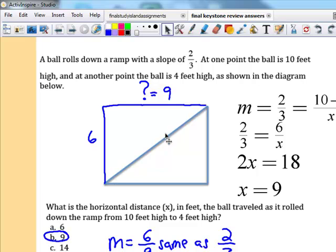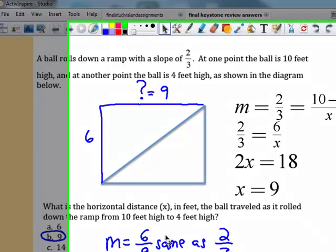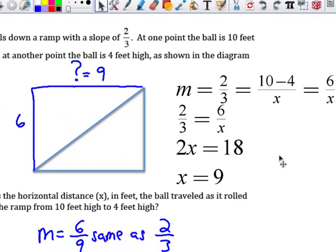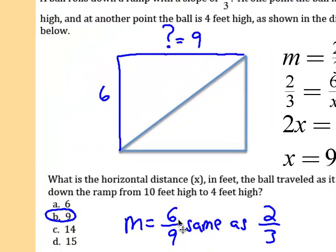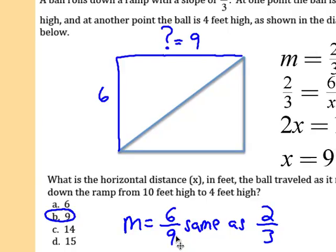Some common sense. We are told that the slope of this line right here is 2 over 3. So we want to know if you go up 6, how far over you have to go for this particular figure. We're told this is 4, this is 10, so the difference is 6.